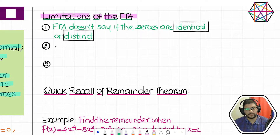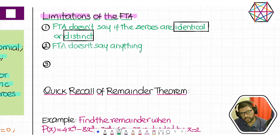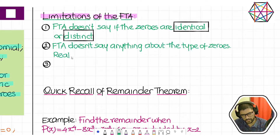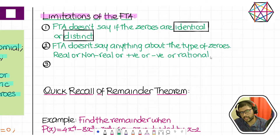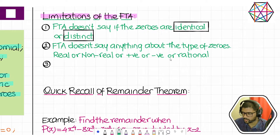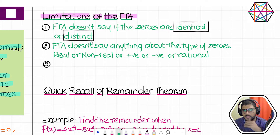The second drawback is FTA does not say anything about the types of zeros — whether they are real or non-real, positive or negative, rational or irrational. It absolutely doesn't say anything about what types of zeros a given polynomial has.